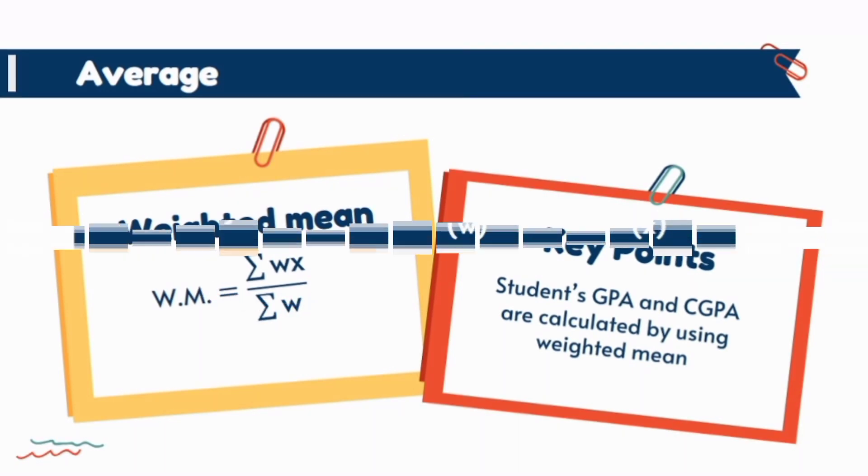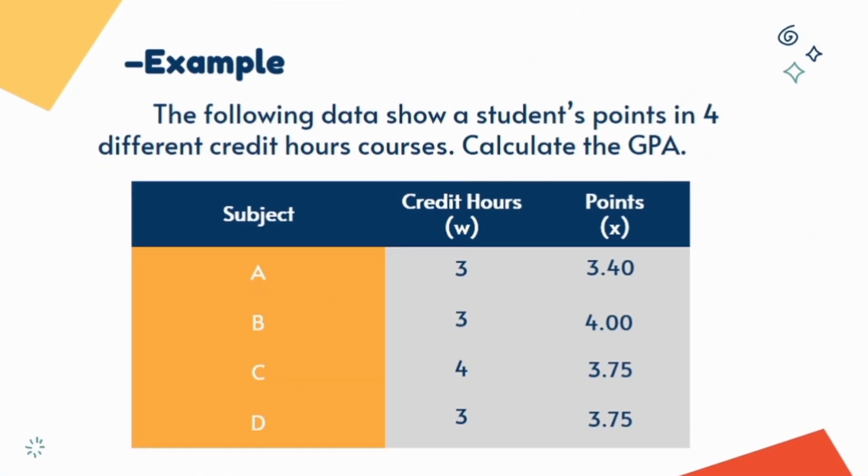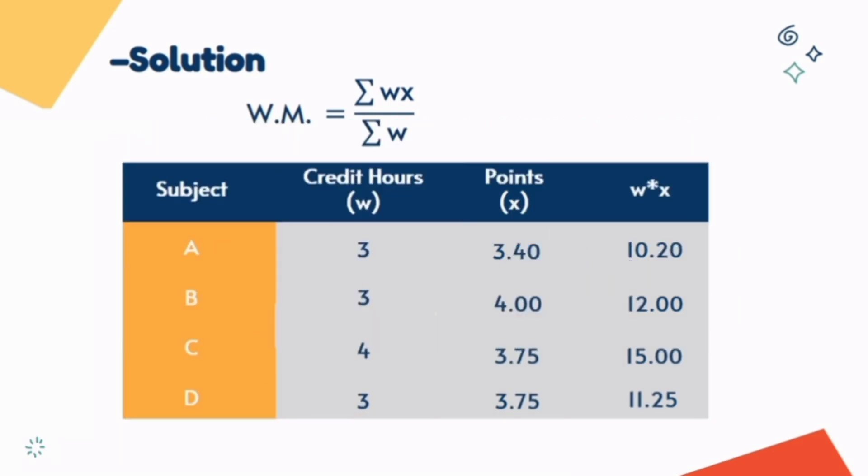For example, a student who had studied four subjects of different credit hours and according to the grade list he got these grade point values. To calculate GPA we use this formula and we make another column of product of weights and values. And then get the required sums, put the values in the formula and get the final result.